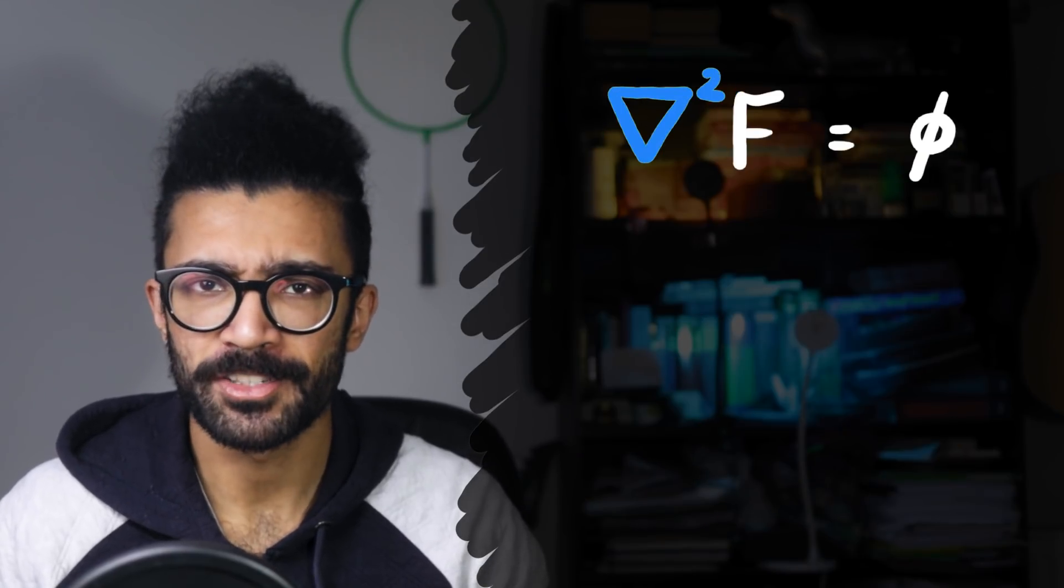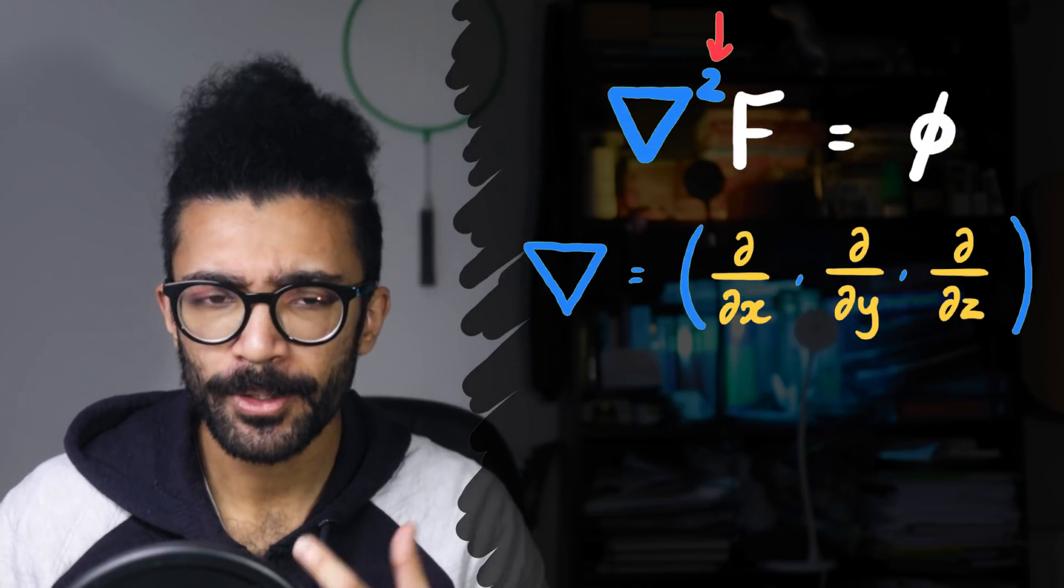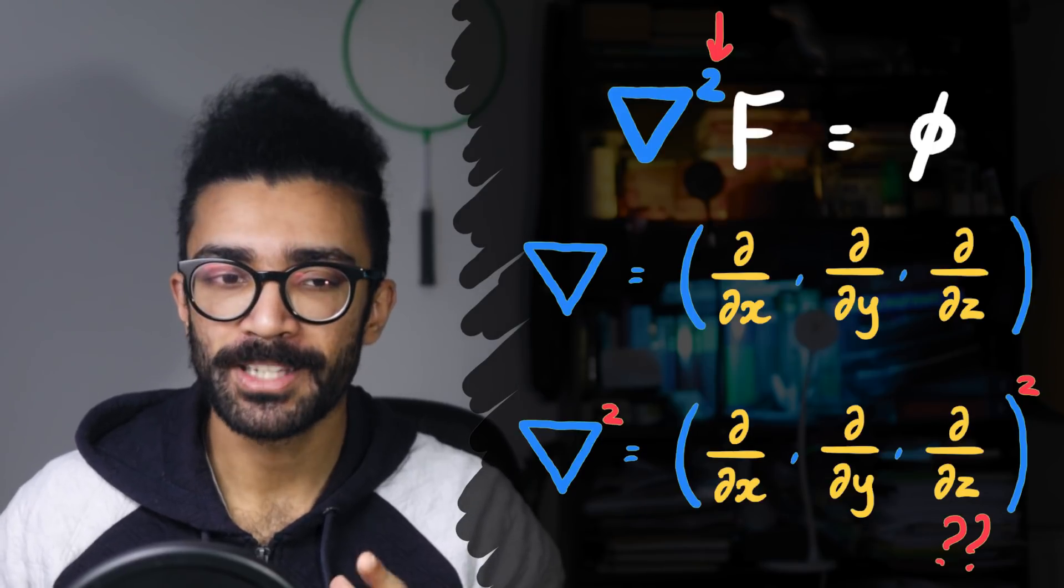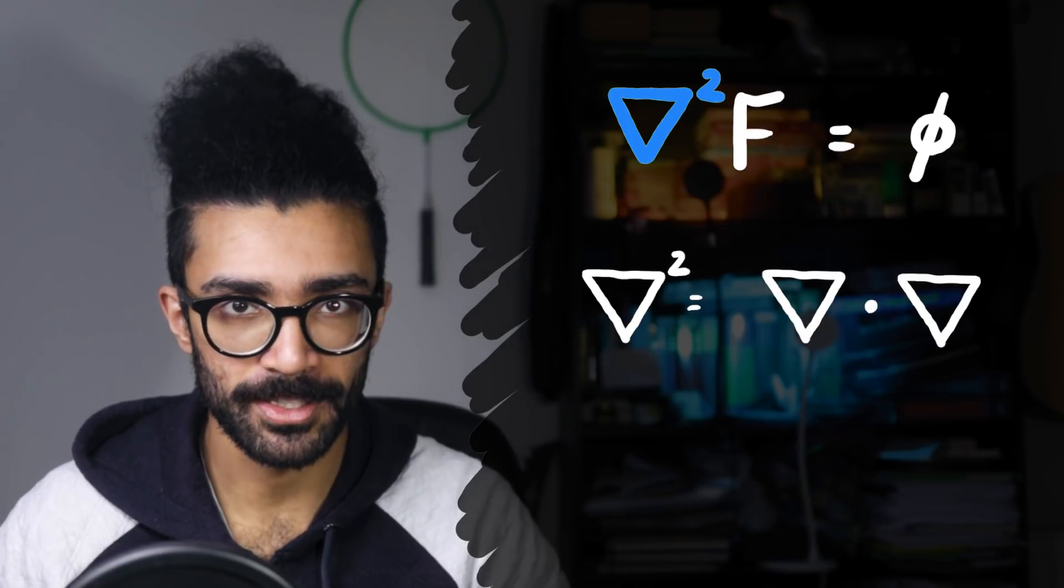The thing is, though, Poisson's equation actually has del squared, rather than just del. Now, if we're thinking of squaring a vector, how does that work? Well, del squared is simply a notation that is actually used to represent del dot del. That's the dot product between two del vectors.